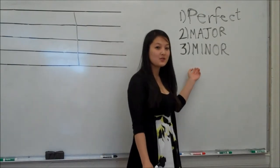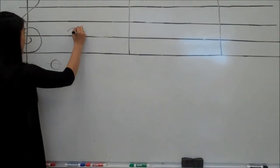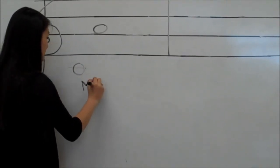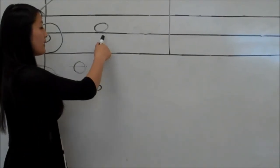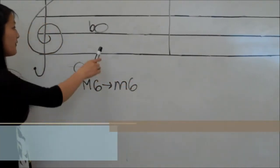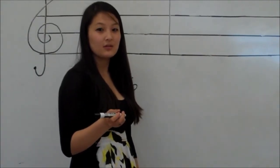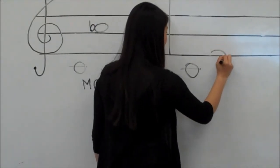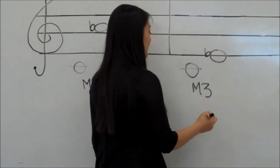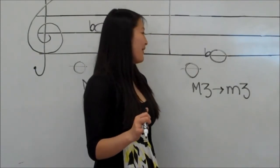Our next type of interval is the minor interval, and it's about the same as the major interval. So if we take C to A, which would normally be a major sixth, and we lower that top note by half a step, making it A flat, it becomes a minor sixth, because A flat is no longer in the key signature of C but is instead lower by half a step. Next, we could do C to an E, and normally this would be a major third, but if we lower the E to an E flat, then we have a minor third because E flat is not in the key signature of C, but lower by half a step.